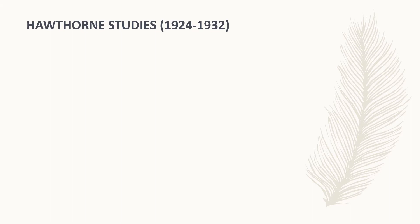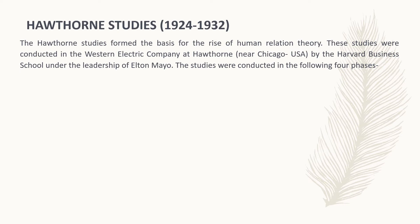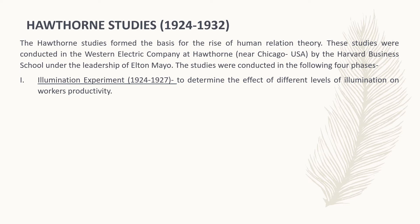Now we will talk about the Hawthorne studies, conducted by Elton Mayo from 1924 to 1932. Mayo started the most intensive human relation study, known as the Hawthorne Study, conducted at the Hawthorne plant of Western Electric Company near Chicago, USA, which employed 25,000 workers at that time. The purpose of the experiment was to measure the effect of improved illumination and to study the psychological and social problems of industrial workers. This study was conducted in four phases.